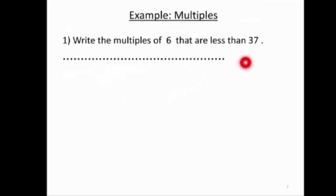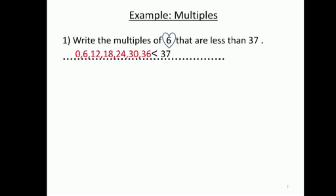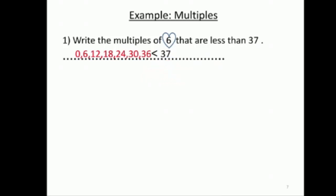Example: multiples of six less than thirty-seven. بعد يجيب الملتبلز لمين؟ للـ six. ما حدا يقول بتجيب الملتبلز للـ six، بنلاحق كلمة 'of': multiples of six. جبنا الملتبلز للـ six، بس أنا ما بطل، بدي يوقف بشرط أنه يضل عندي less than thirty-seven. إذا أنا هون حصلت على forty، بتبطل لأنها ما عادت less than thirty-seven.